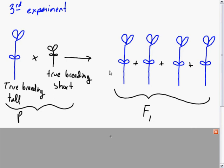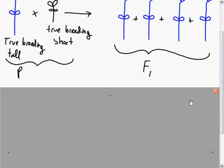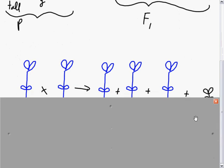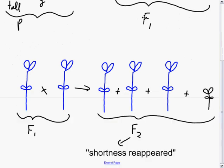So two true breeding plants, tall and short, and all of the offspring were tall. The short factor completely disappeared. The first generation here is known as P for parent, and the first offspring are known as F1.